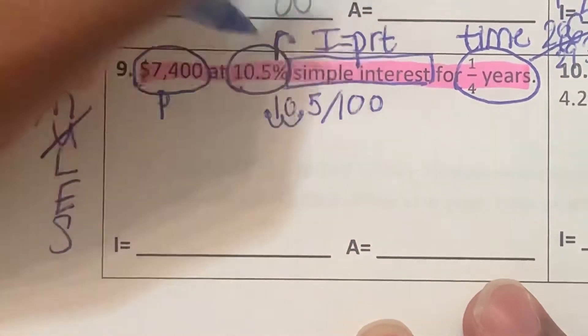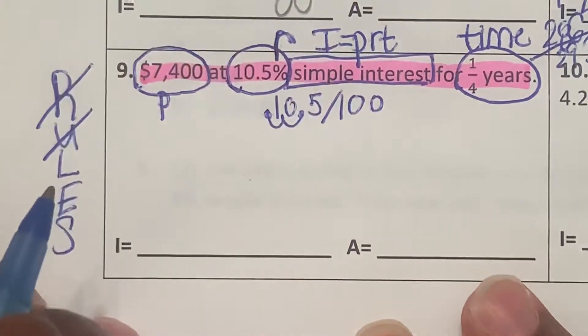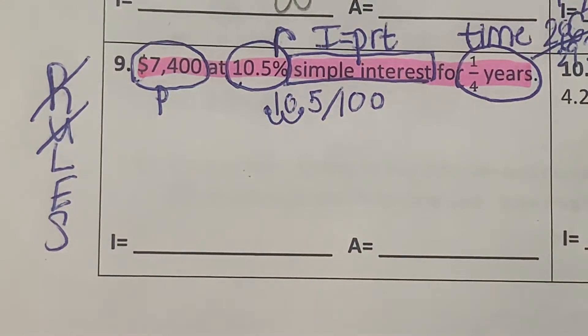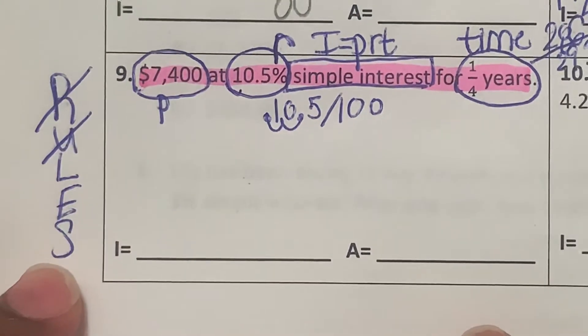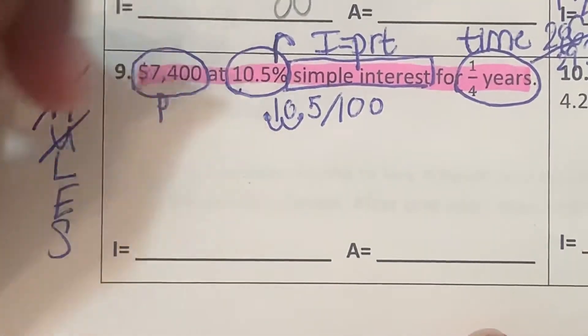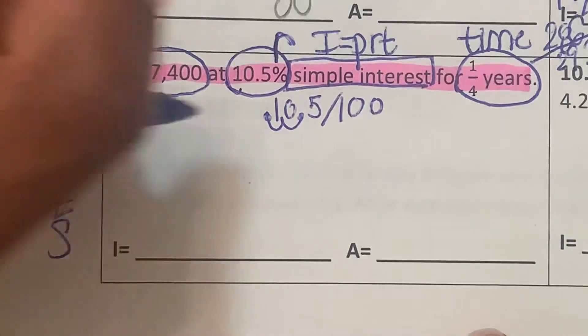One, two places towards the left, which is going to give us 0.105.